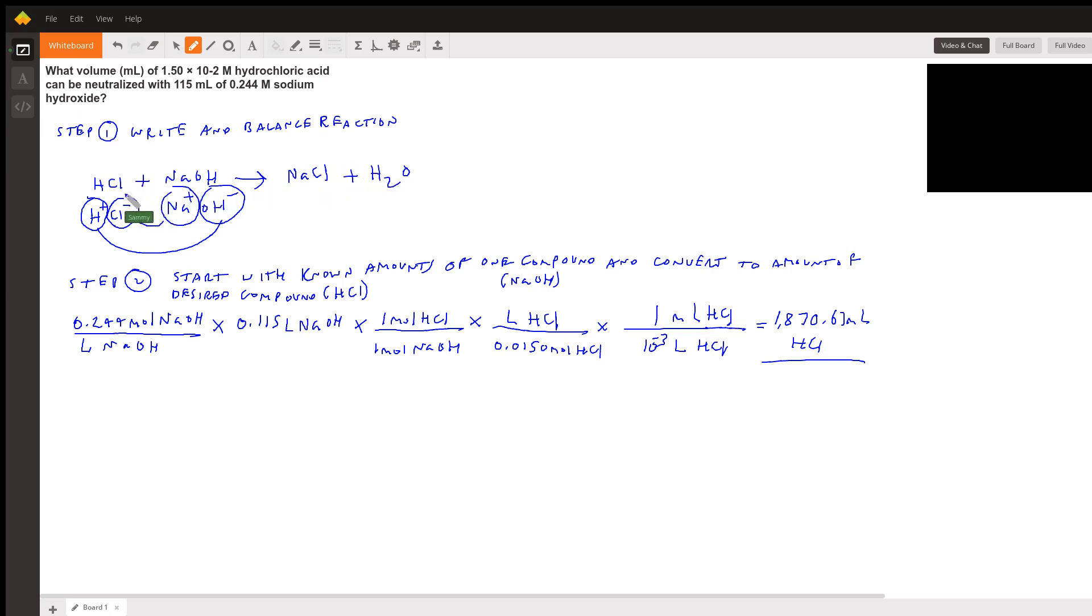We need to make sure that they're balanced. On the left side we have two H's, on the right side we have two H's, so H's are balanced. We have one Cl on both sides, one Na on both sides, and one O on both sides. This is a balanced equation.